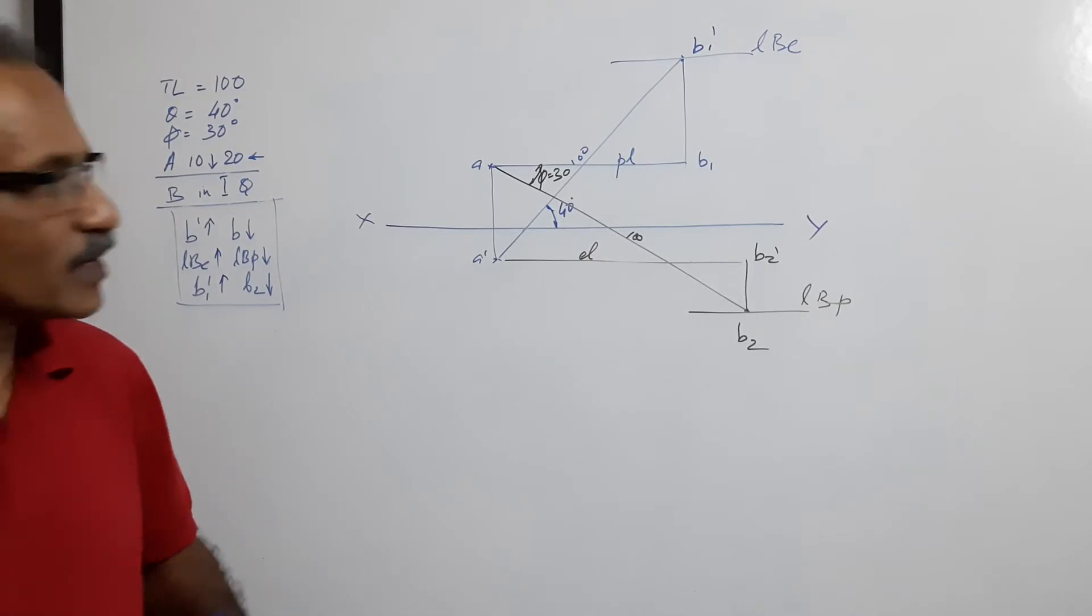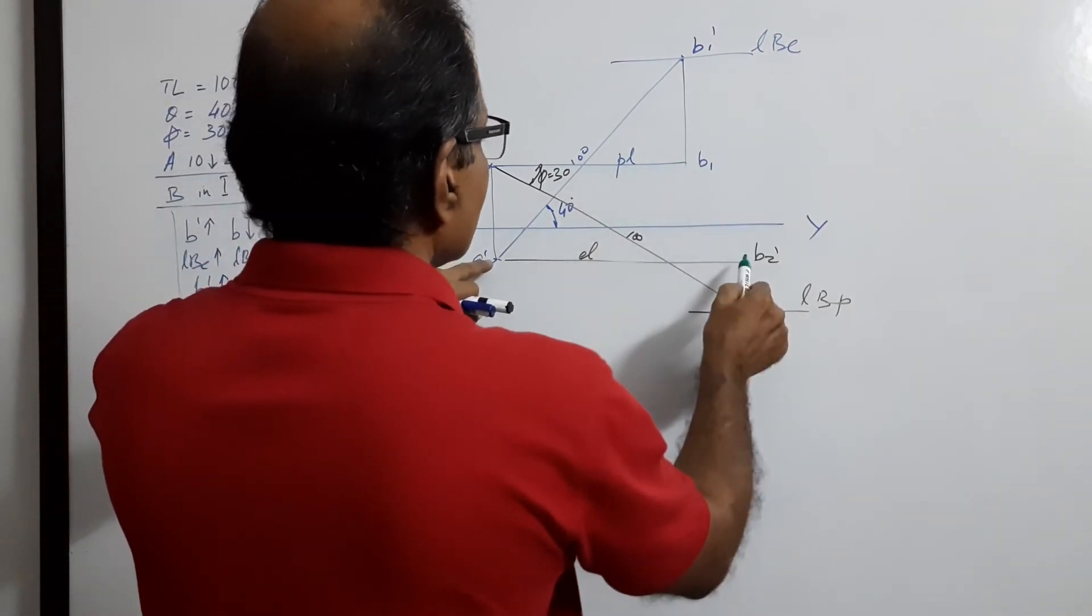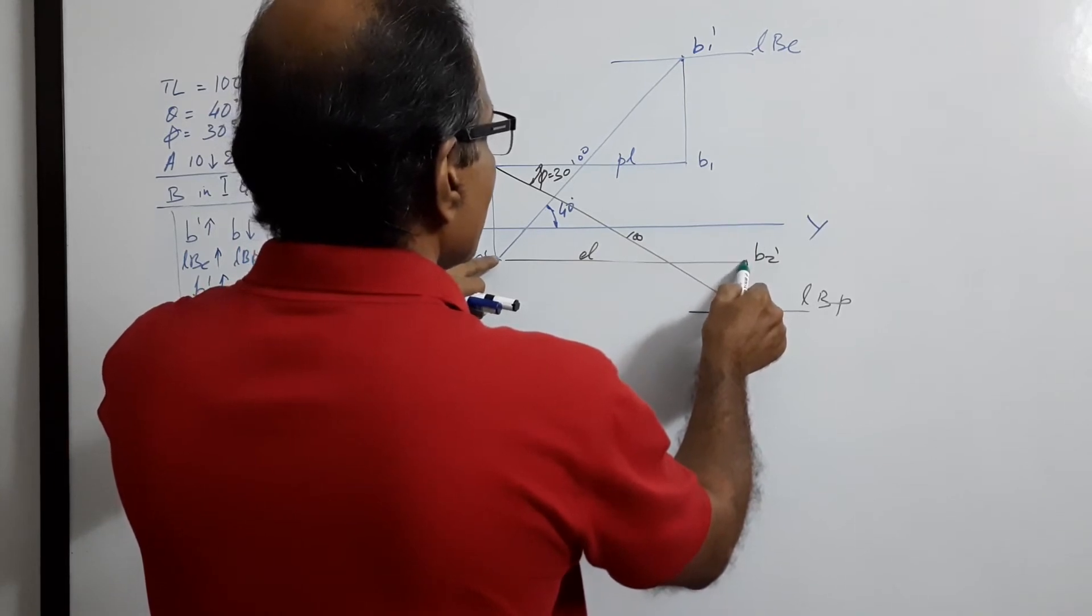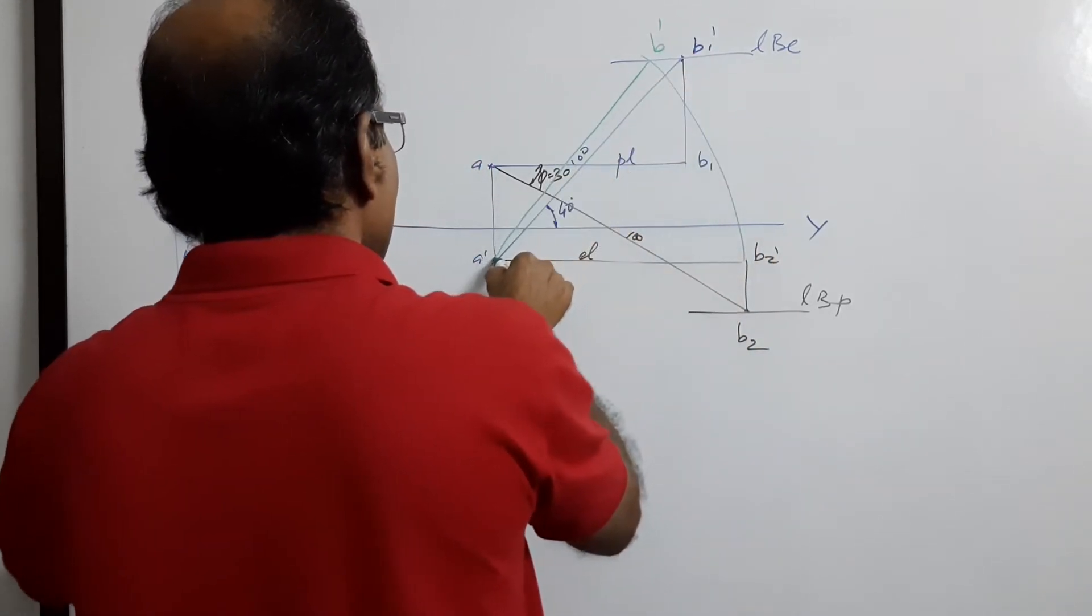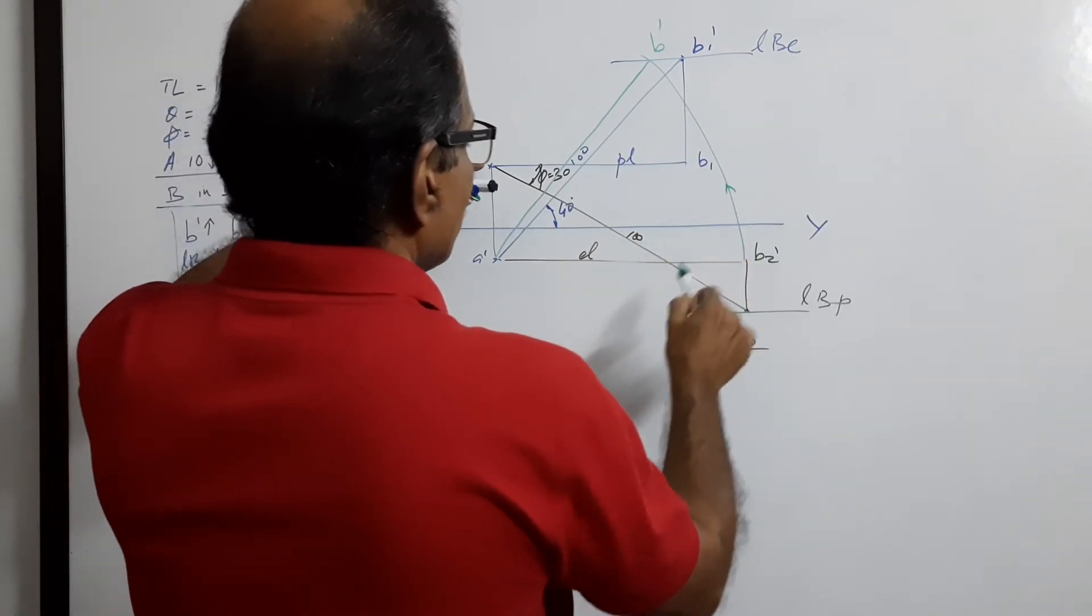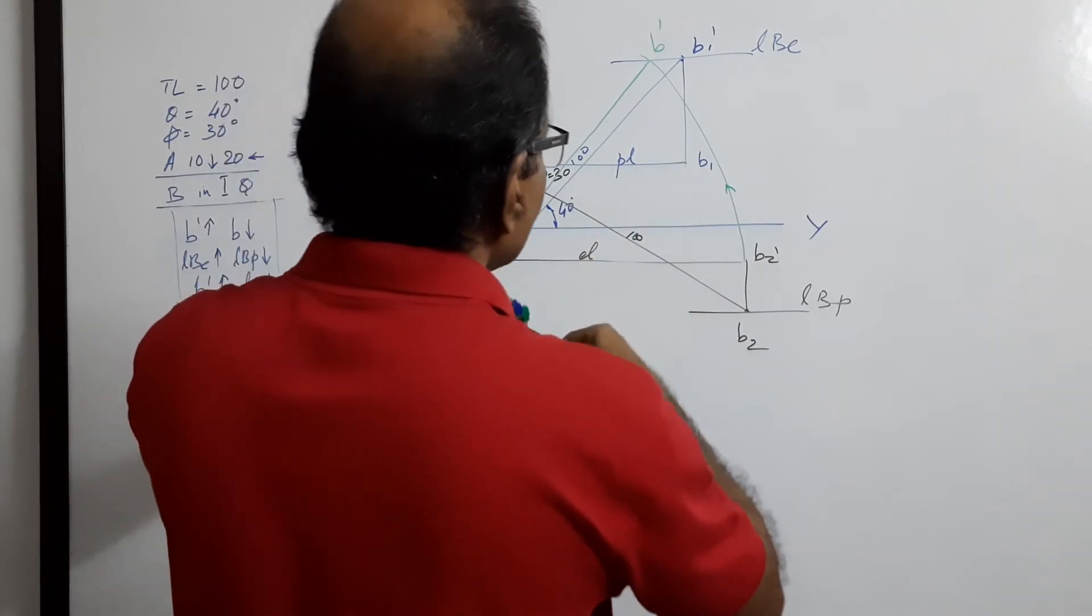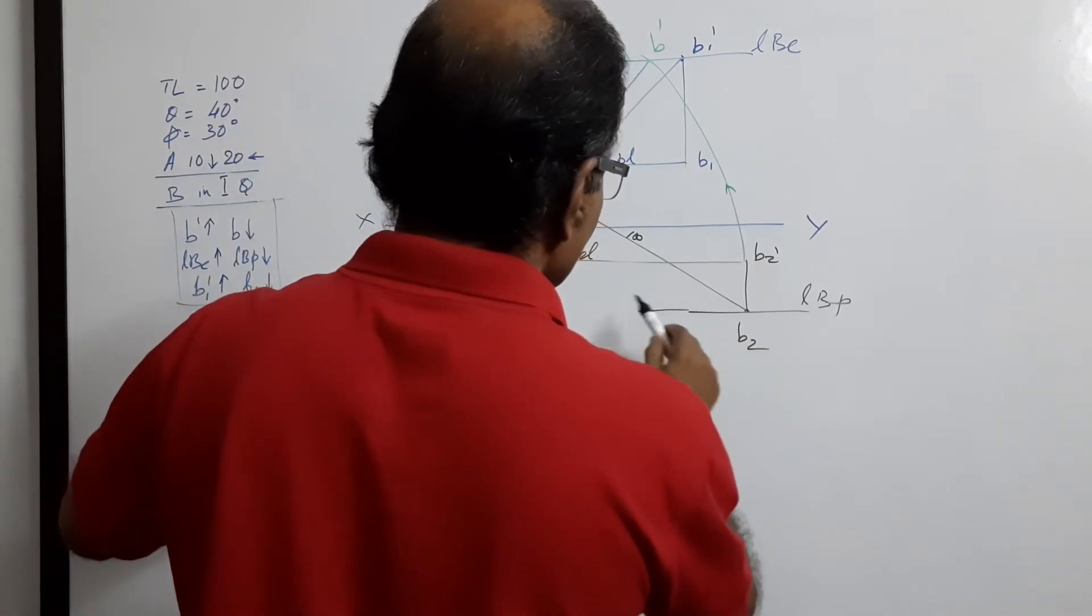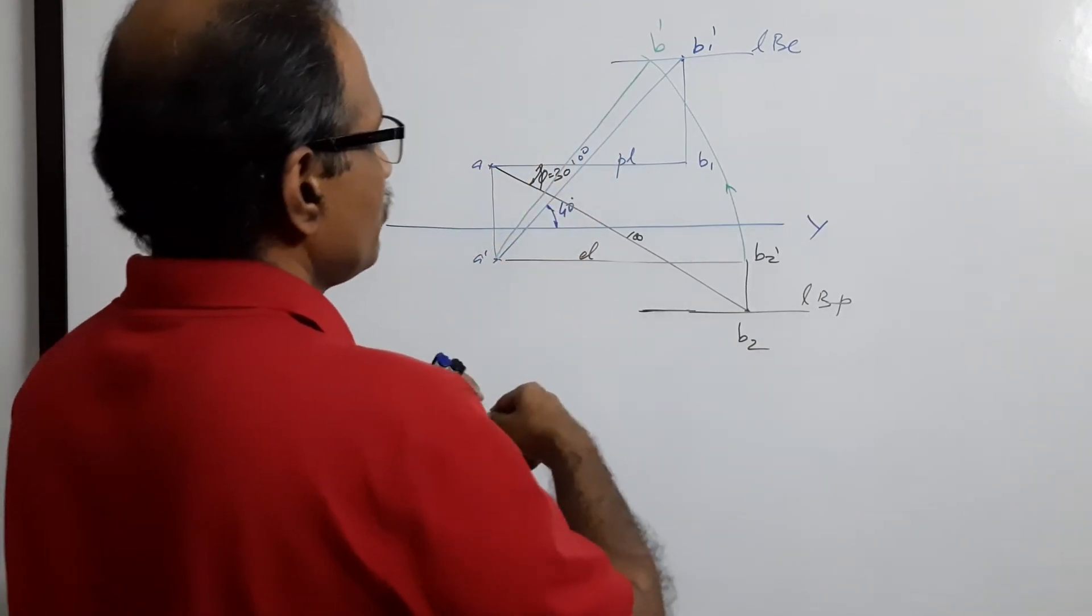Using plan length as radius, draw arcs. Take B3 to B dash. From A dash to B dash is the elevation. Use plan length radius to cut an arc on LBP.